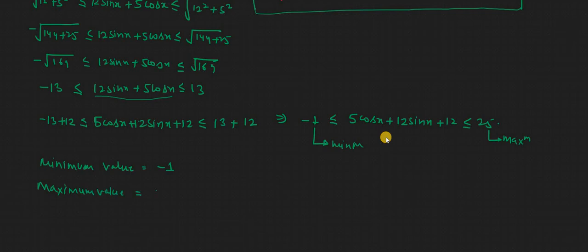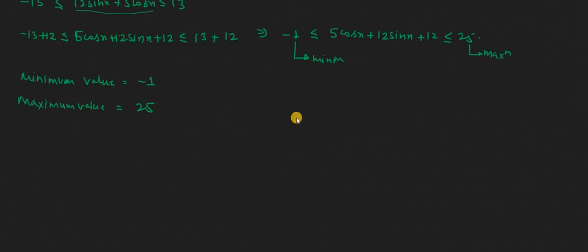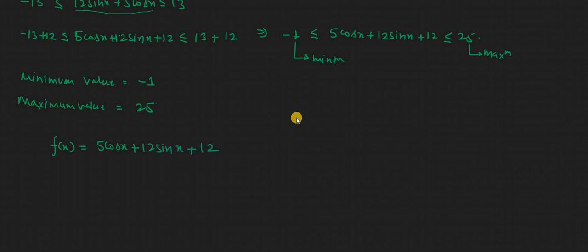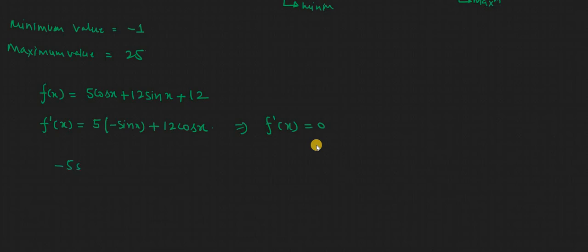Now we will use the same question and try to find the answer with another method using calculus. Let f(x) = 5cos(x) + 12sin(x) + 12. The first step is to find the differentiation: f'(x) = −5sin(x) + 12cos(x).